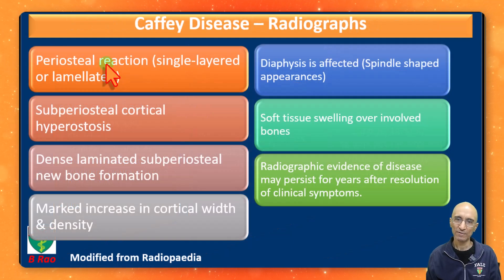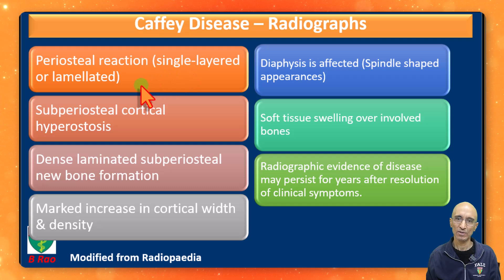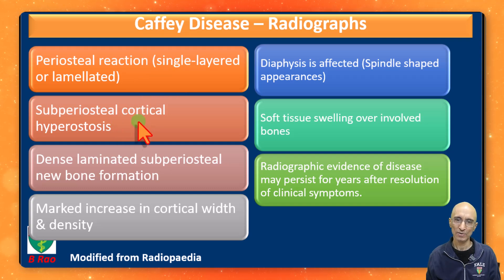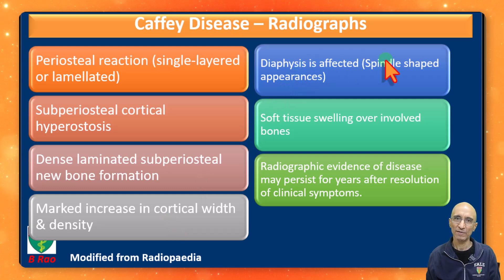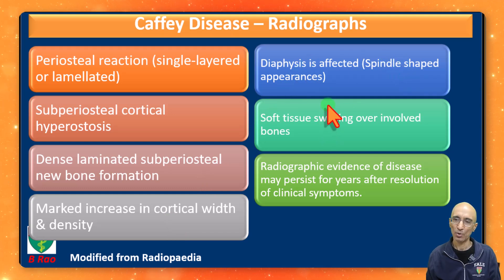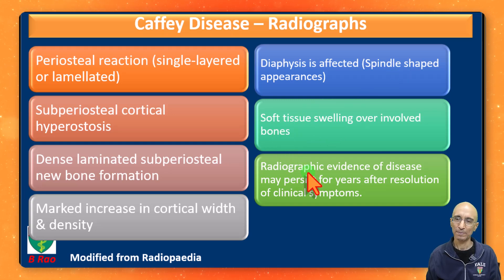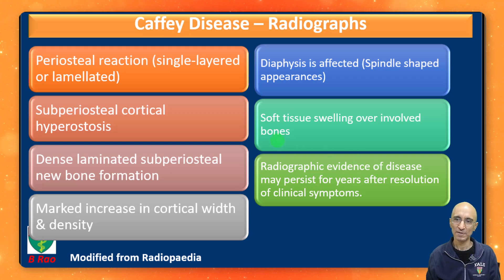On the radiograph, we will classically see single or laminated periosteal reaction, cortical hyperostosis, and dense laminated subperiosteal new bone formation. There will be increased width of the bone. The diaphysis is commonly involved, giving a spindle-shaped appearance overlying the bone formation. There can be soft tissue swelling. Radiographic changes can persist for many years even after resolution of clinical symptoms.